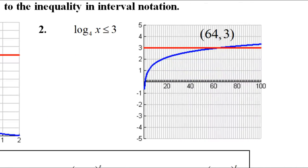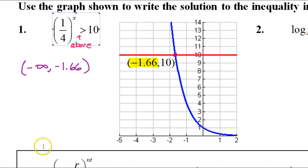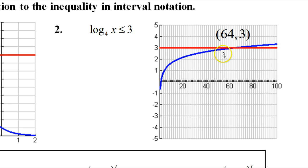Now, with logarithmic functions, it's the same thing with one exception: logs cannot be negative. You can't take the log of a negative number, and you can't take the log of 0 either. So this x value has to be greater than 0. On that previous problem we had solutions going from negative infinity to negative 1.66 — nothing like that could ever happen with logs. If it's something heading towards negative infinity, it's going to have to start from 0 and then go from there.